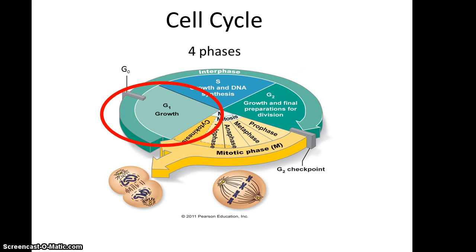The first is G1. In G1, this is when the cell is basically increasing its size after cell division — increasing the amount of cytoplasm and the organelles within. If the cell is not going to divide again, it then enters what's known as G0.